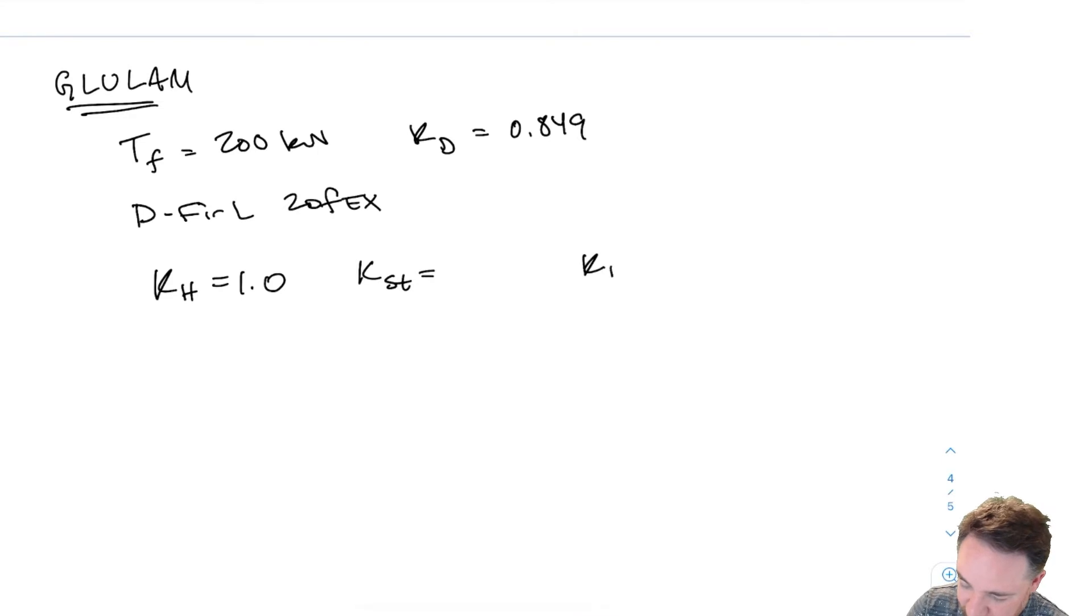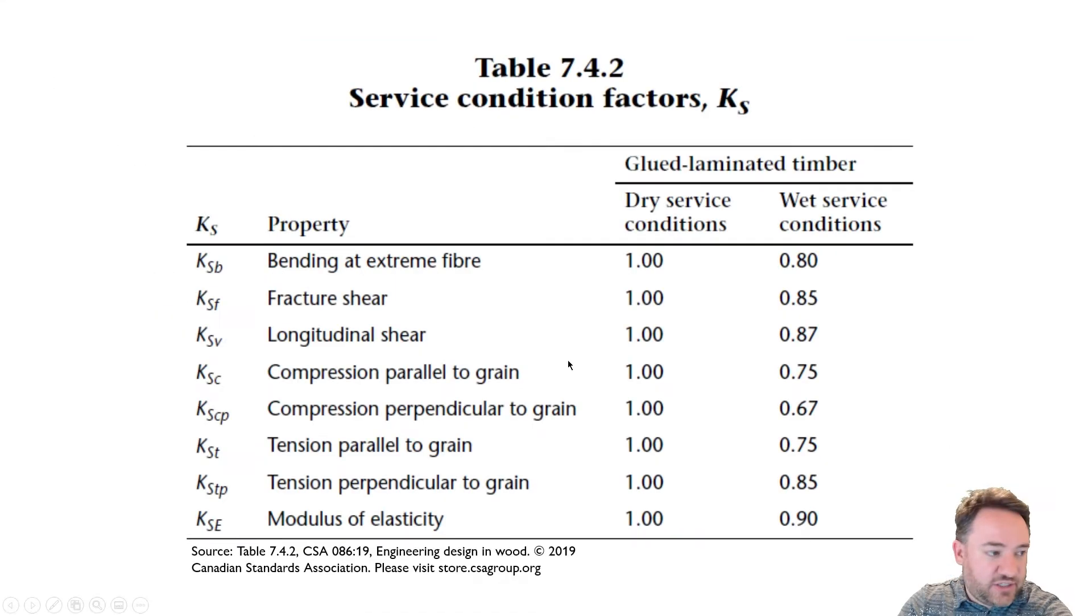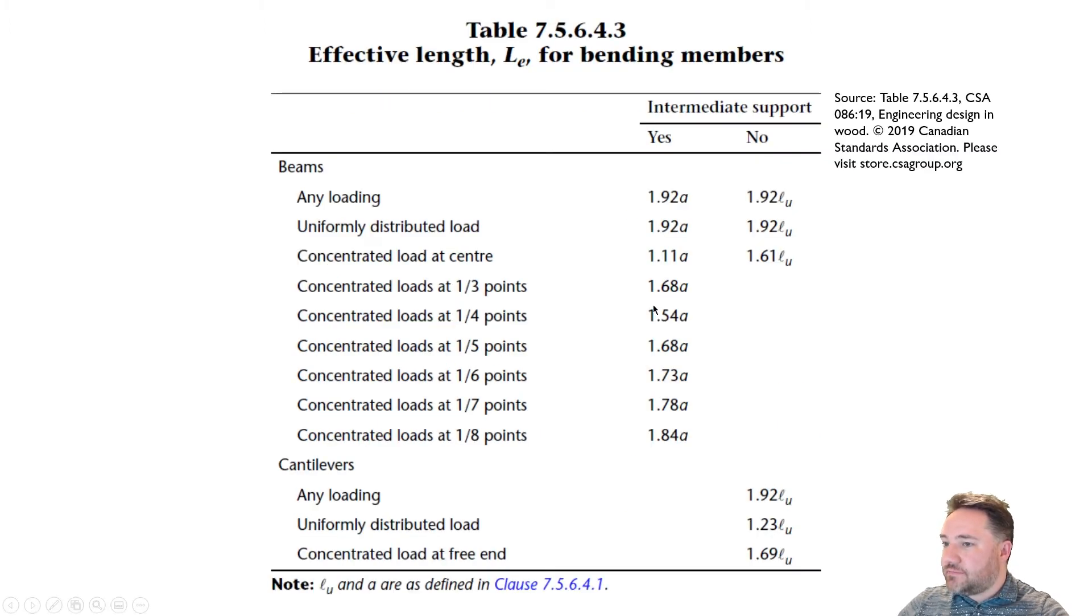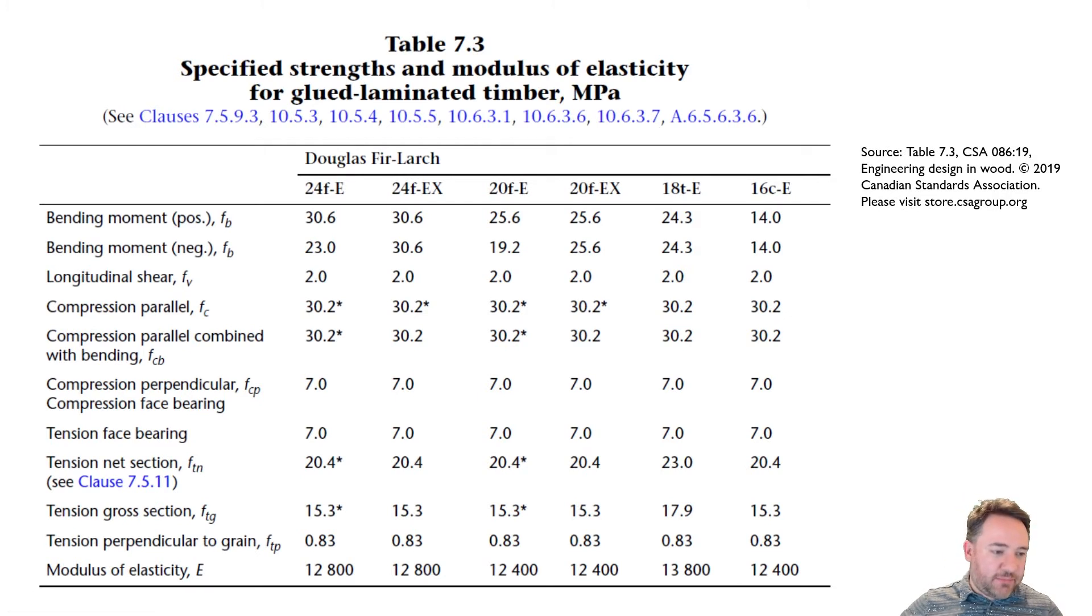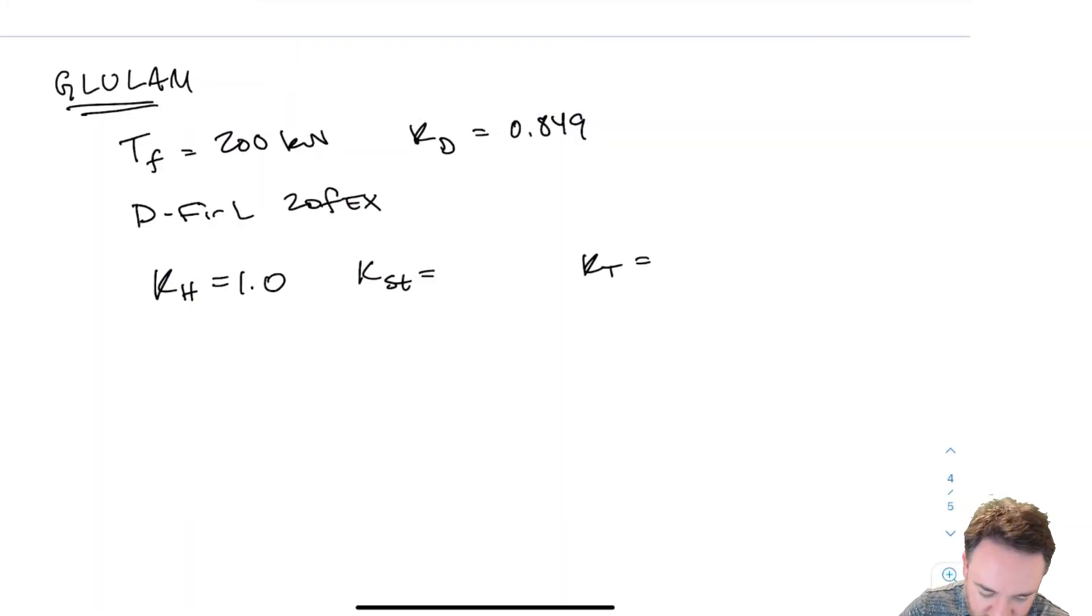KH is going to be 1.0 because we have one member by itself, so there's no sharing of load. KST we don't know, and KT we don't know, so let's go to those tables. Here is the service condition factor for glulam. I have KST tension parallel to grain. It only has a difference between dry and wet, and you'll recall that for this problem our service condition is wet, so we're going to have to use basically this value here, 0.75. For KT for glulam, it states in the code that basically it's always going to be 1.0.